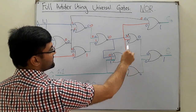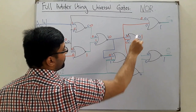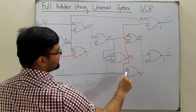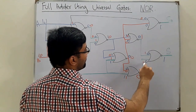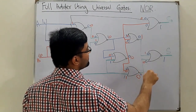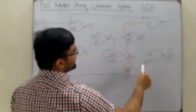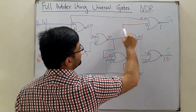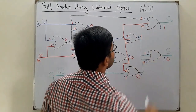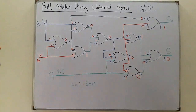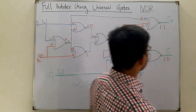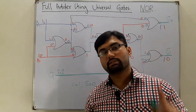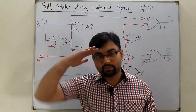With C=1, 1 NOR 0 gives 0, so we have 0 here. Then 0 NOR 0 gives 1. We have 0 and 1: zero NOR one is 0. Then 1 NOR 0 gives 0, and 0 NOR 0 gives 1 — so carry is 1 and sum is 0. That's proven and correct. This concludes the full adder using NOR gates. See you in the next lecture, inshallah. Take care, goodbye.